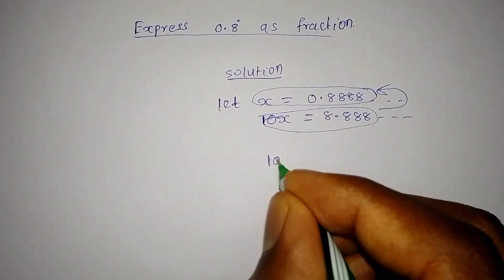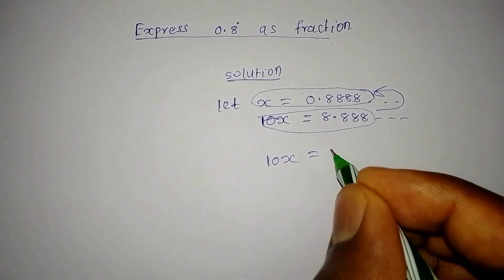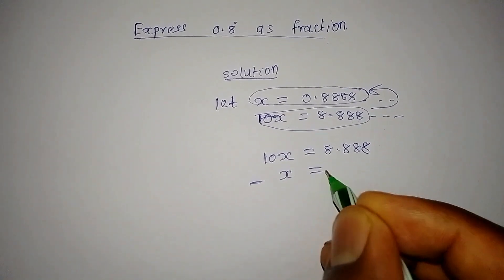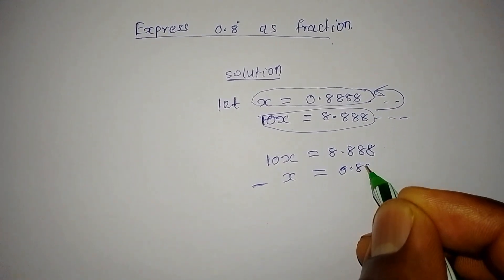So 10x equals 8.888, subtracting x which equals 0.888.